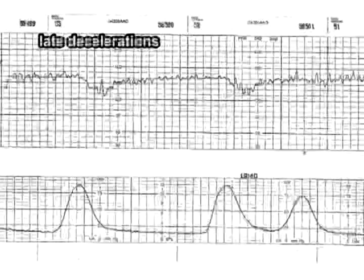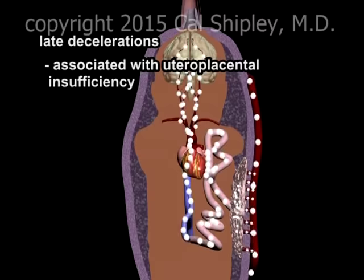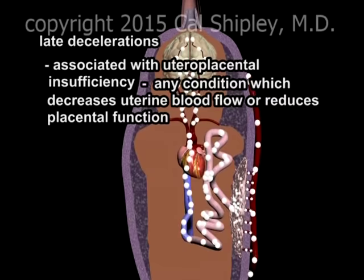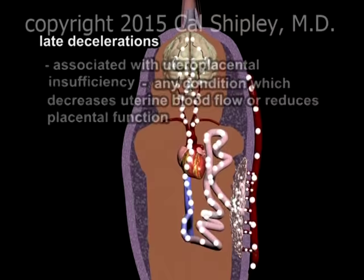Now let's consider late decelerations. Late decelerations consist of a symmetrical pattern of heart rate deceleration which begins at or after the peak of uterine contraction. Late decelerations are associated with utero-placental insufficiency and are triggered by uterine contractions. In essence, any condition which impairs uterine blood flow or results in a significant decrease in placental function can cause late decelerations.